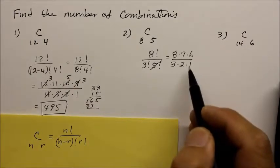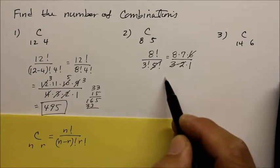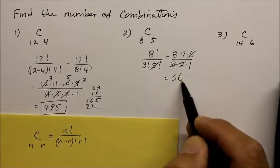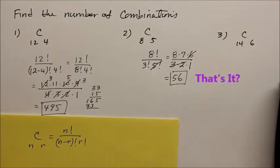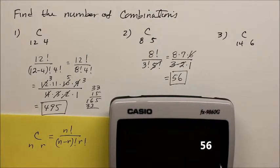I could reduce this. 3 times 2 reduces that 6. So this is simply 8 times 7, which is 56. Yeah, that's it! Check it with the calculator. 8 choose 5, combination, there's your 56.